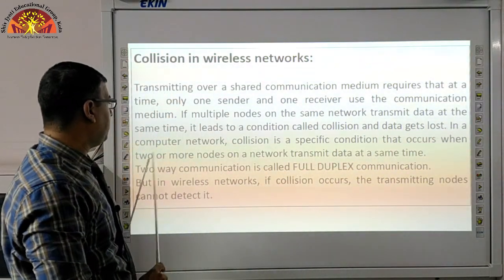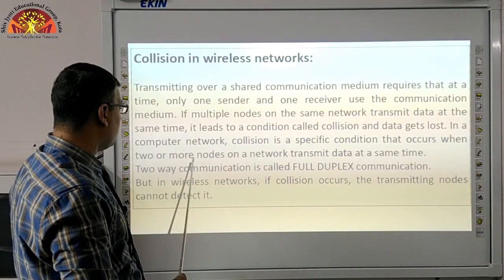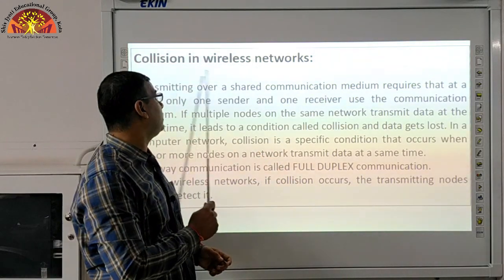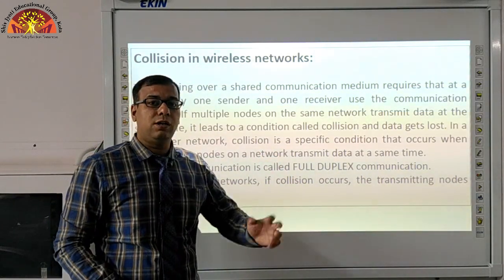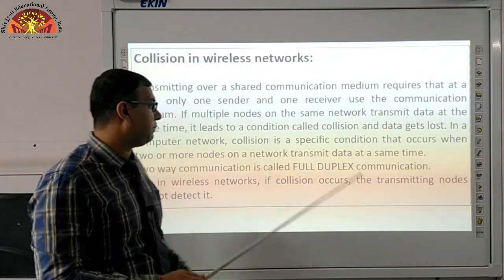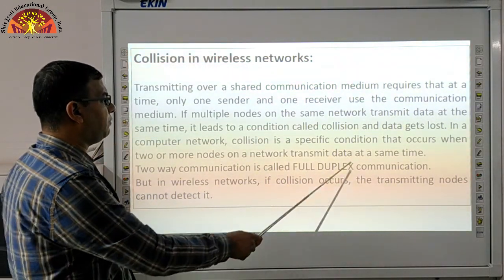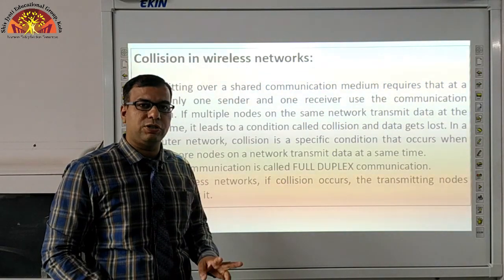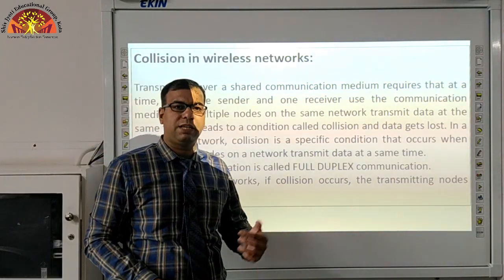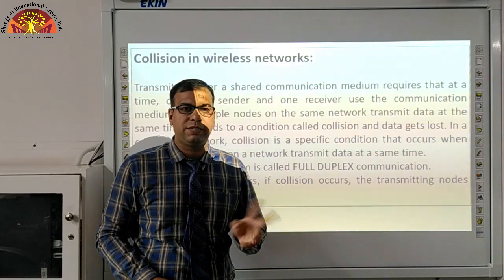In a computer network, collision is a specific condition that occurs when two or more nodes on a network transmit data at the same time. So collision is generated when two or more computers send data simultaneously. Two-way communication is called full duplex communication. One-way communication means one side is talking and the other is listening; two-way communication means both sides are communicating.